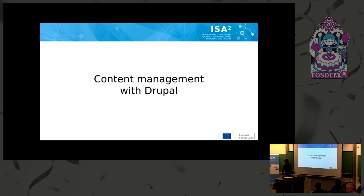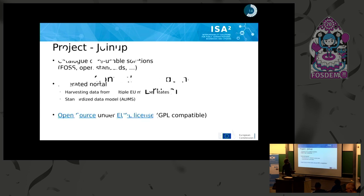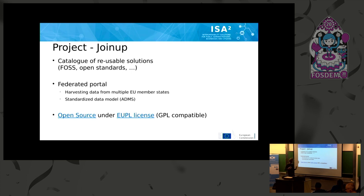Coming to the Drupal part: we have the JoinUp project, a catalog of reusable open source solutions. We try to express everything there in a machine-readable format so that people can also reuse our catalog. It is really a federated portal — member states of the European Union have their own catalogs, and we harvest data from them and combine it into one European catalog. It's licensed under EUPL and is open source.